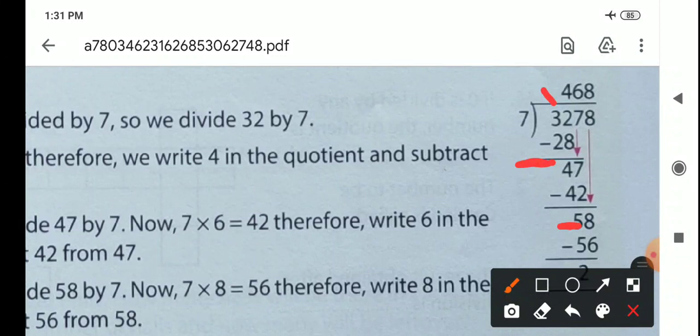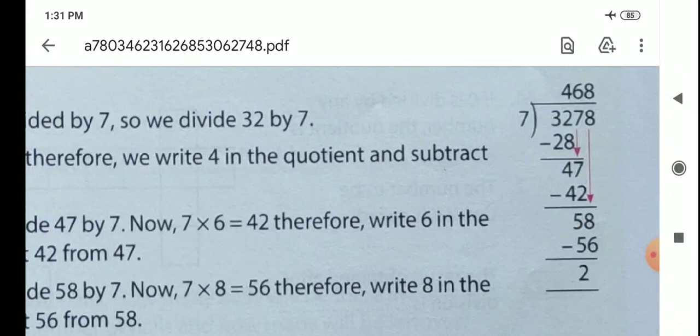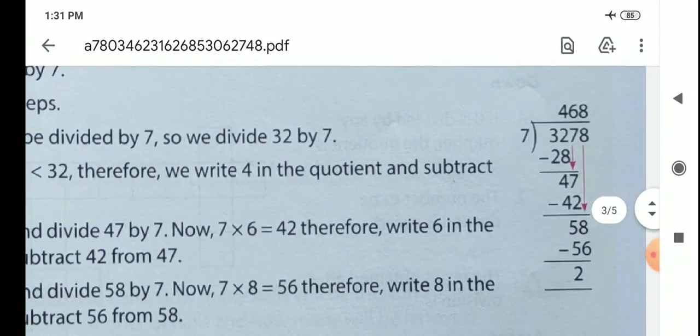Then bring down 8. We get 58. 7 times 8 is 56. 58 minus 56 is 2. So 2 is the remainder. 468 is the quotient.